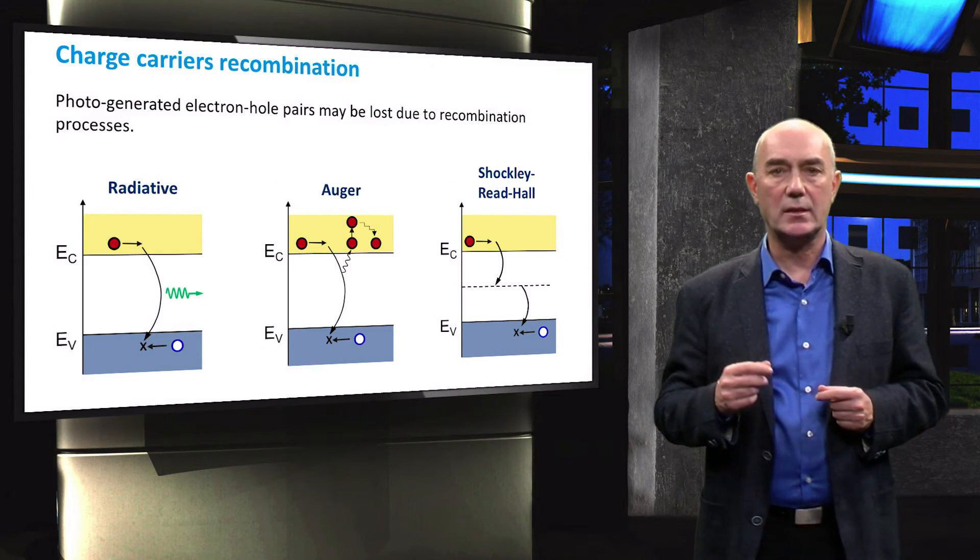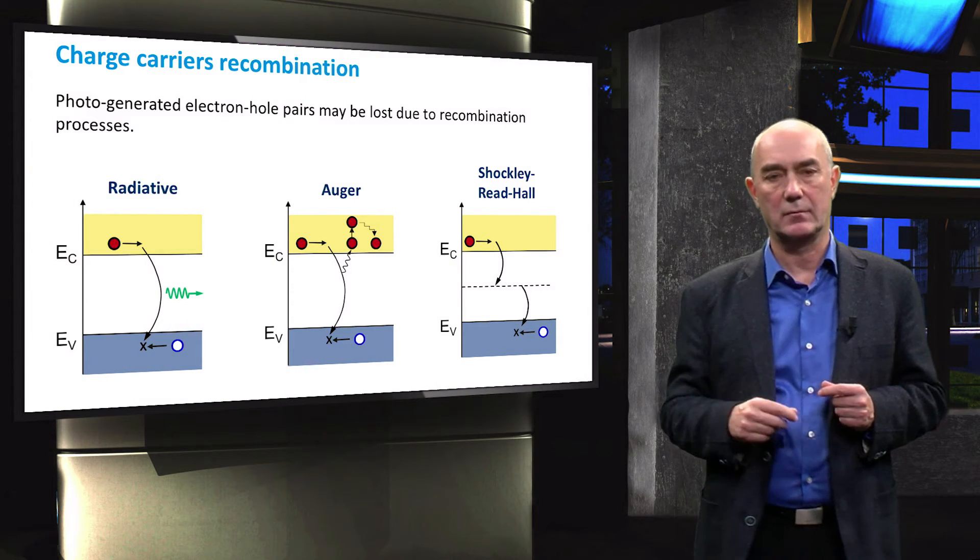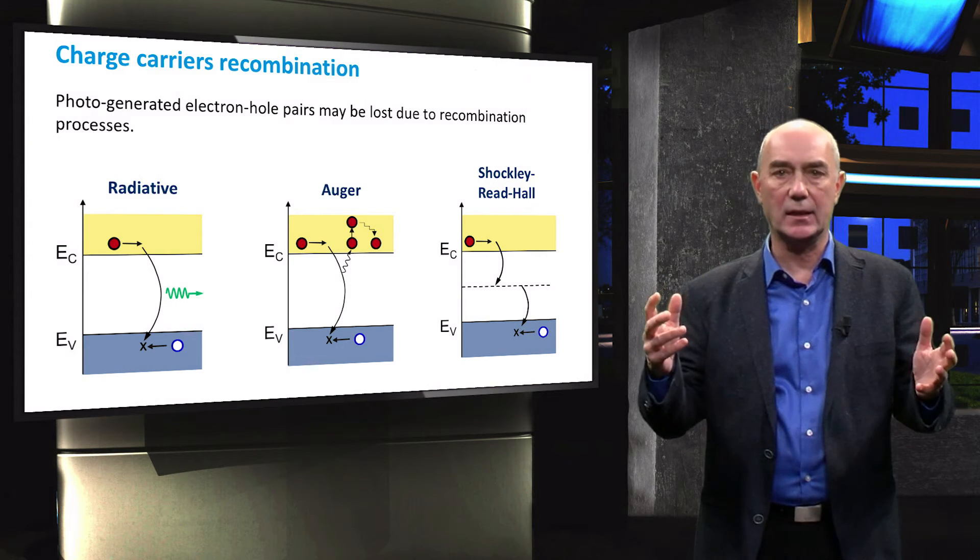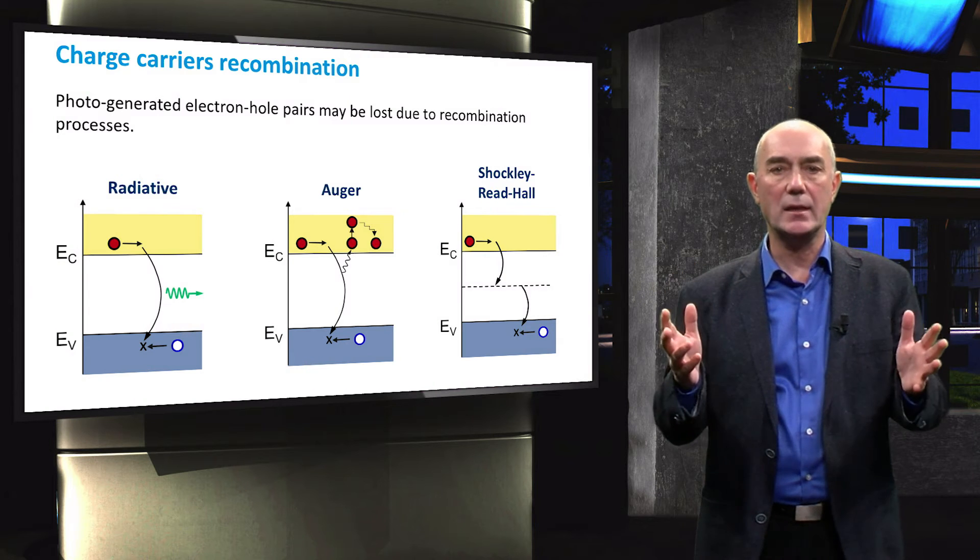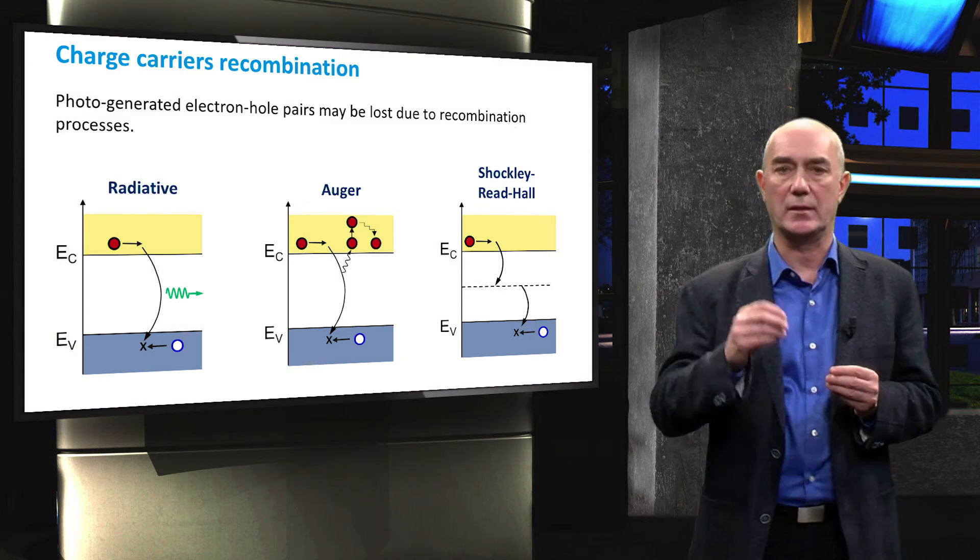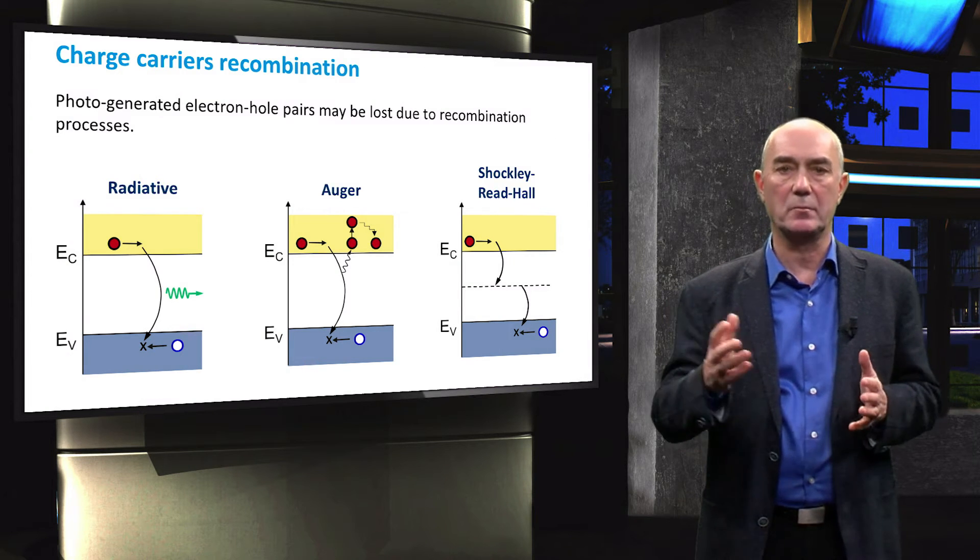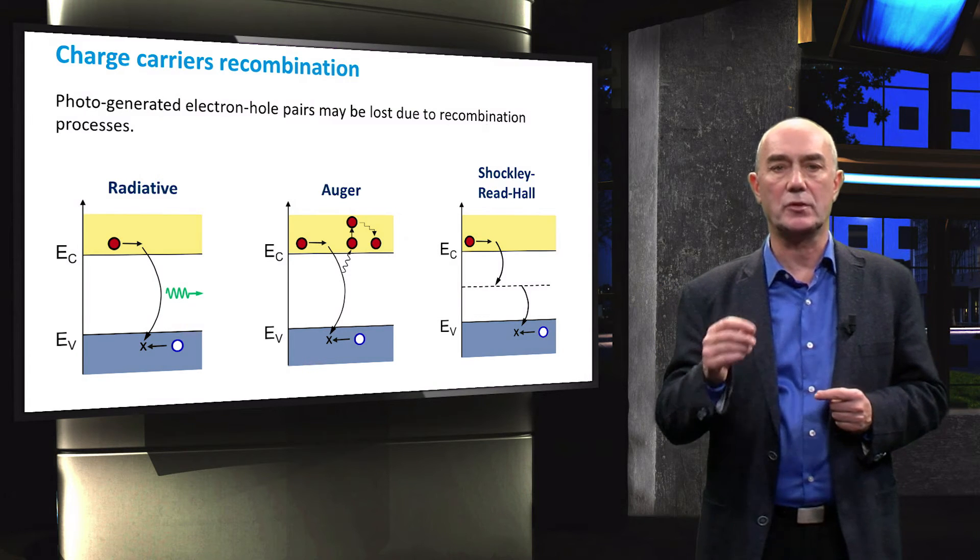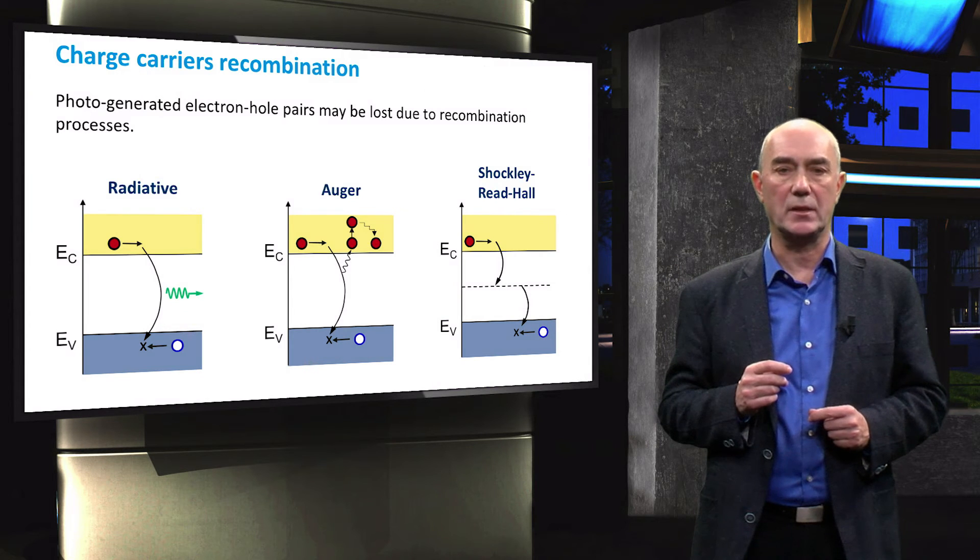Generation is in high competition with its opposite process – recombination. This essentially means that excited electrons return to form covalent bonds. Band diagram is a good means to visualize this process. There are three main mechanisms of recombination and you will learn all about each of them in future videos. This will conclude the second week on semiconductor physics.